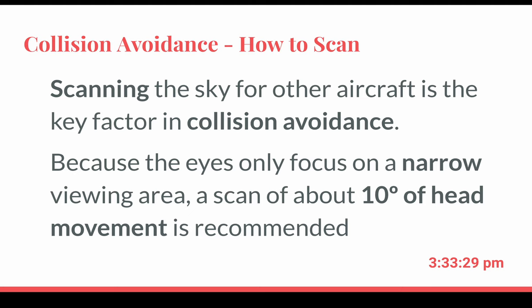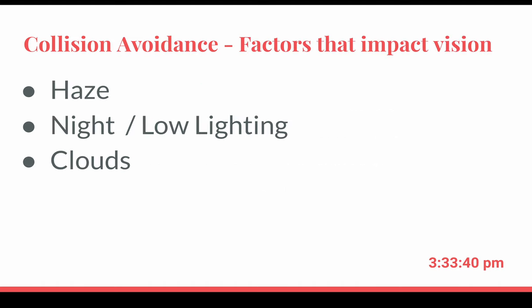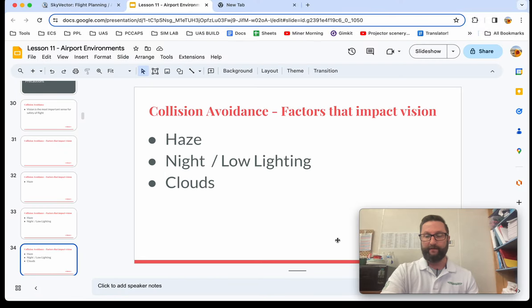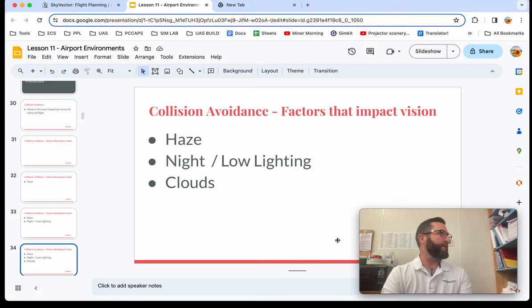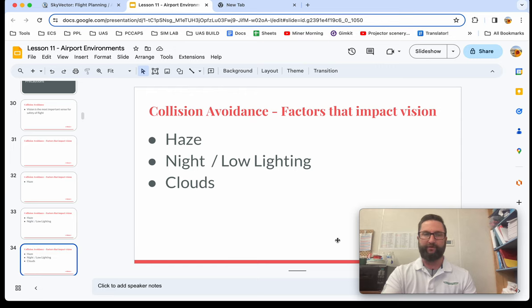Because the eyes only focus on a narrow viewing area, a scan of about 10 degrees of head movement is recommended. When you're scanning, you don't want to look around quickly — you want to move your head in small 10-degree increments and look up and down slowly while looking for aircraft.